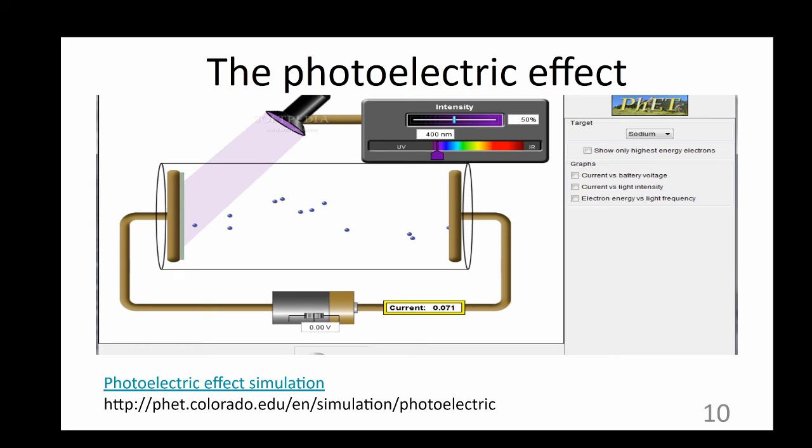First, let's see what happens if we keep the intensity the same but decrease the wavelength, essentially increasing the frequency. All the small spheres you see are electrons being emitted from the metal. As we decrease the wavelength, the amount of emitted electrons increases.